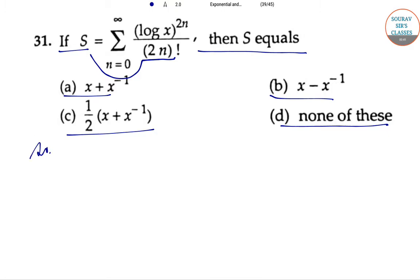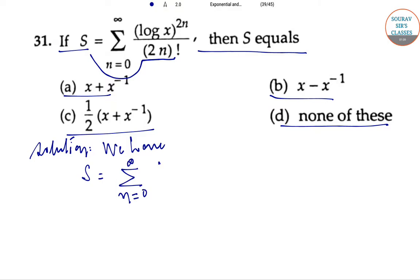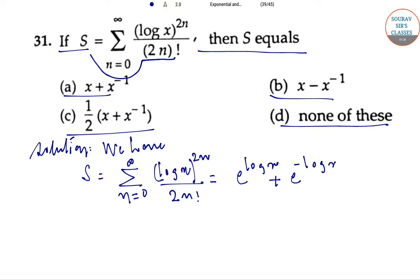The solution: S equals the sum from n equals 0 to infinity of (log x)^(2n) divided by (2n) factorial, which equals e to the power log x plus e to the power minus log x, divided by 2. This is equal to x plus x to the power minus 1, divided by 2.